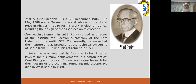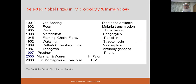Another important discovery was the electron microscope by Ernst Ruska. Selected Nobel Prizes in Microbiology and Immunology include: von Behring for diphtheria antitoxin (1901); Ross for malaria transmission; Robert Koch for discovery of Mycobacterium tuberculosis; Metchnikoff for phagocytosis; Fleming and Florey for penicillin; Waksman for streptomycin; Tonegawa for antibody genetics; Marshall and Warren for H. pylori; and Montagnier and Gallo for HIV-AIDS.